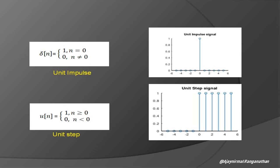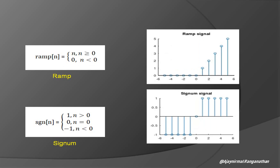u(n) is the unit step signal, which equals 1 for n greater than or equal to zero and 0 for n less than zero — you have the graph again. Then we have the ramp signal r(n), which equals n for n greater than or equal to zero and 0 for n less than zero.